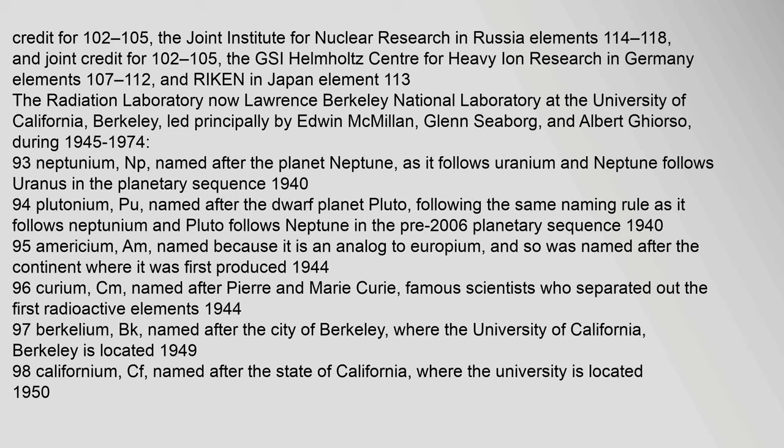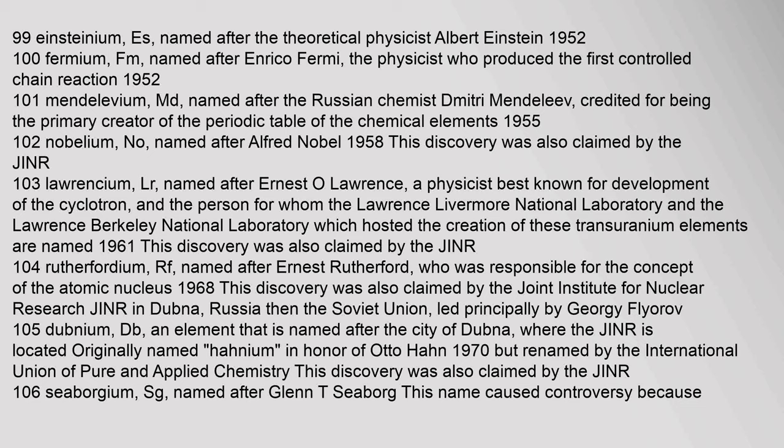Element 98, Californium (Cf), named after the state of California where the University is located, 1950. Element 99, Einsteinium (Es), named after the theoretical physicist Albert Einstein, 1952. Element 100, Fermium (Fm), named after Enrico Fermi, the physicist who produced the first controlled chain reaction, 1952. Element 101, Mendelevium (Md), named after the Russian chemist Dmitry Mendeleev, credited for being the primary creator of the periodic table of the chemical elements, 1955.